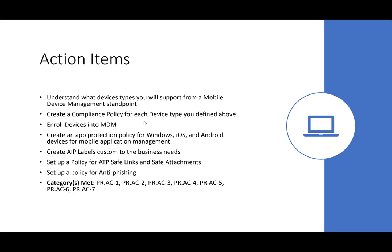For action items: understand the devices you're going to support, create your policies around that, create labels for labeling documents. Set up the ATP Safe Links policy, Safe Attachments policy, and anti-phishing policies. If you find high-level users in your organization — like the CEO or people most susceptible to spear-phishing attacks — you can scope granular policies around them in particular for heightened protection.